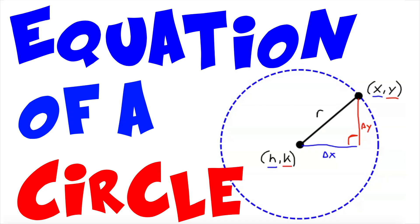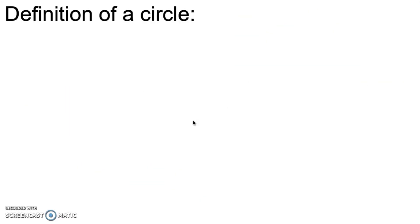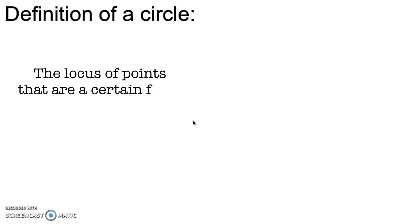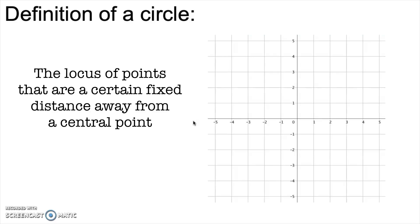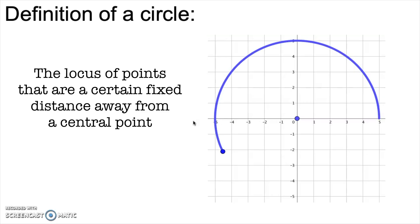One of the things that's really cool about a circle is how simple it is. So what is a circle? It's the locus of points that are a certain fixed distance away from a central point, which we call the center. If we want to create a specific circle, we need to choose two things: the center and the radius. Then we simply locate all of the points that are the correct distance away from the center — in this case, five. All of those points together make up our circle.